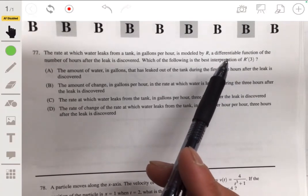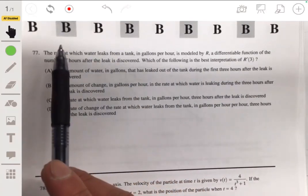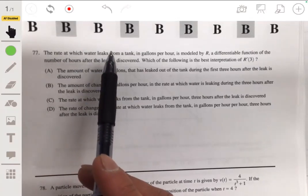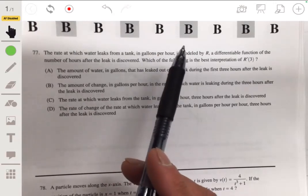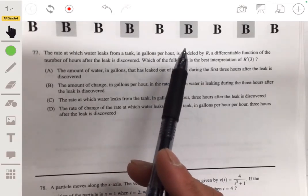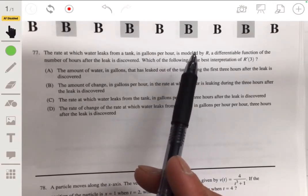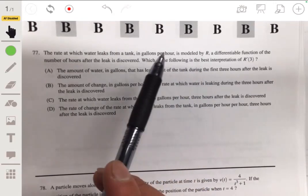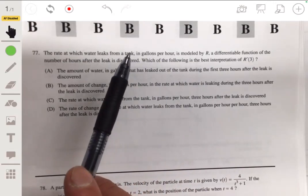Okay, so we're already told that r represents rate, the rate at which the water is leaking. So r prime would be the rate of the rate. Think of it like r as velocity and then r prime as acceleration. So r prime is basically going to talk about how fast the rate of water leaking is changing.